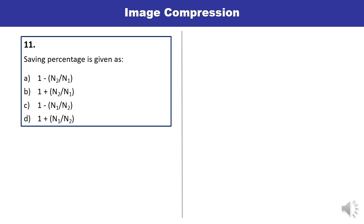Question 11: Saving percentage is given as what formula? You have studied the saving percentage formula. Saving percentage can be written as 1 minus N2 upon N1. A is the correct answer.